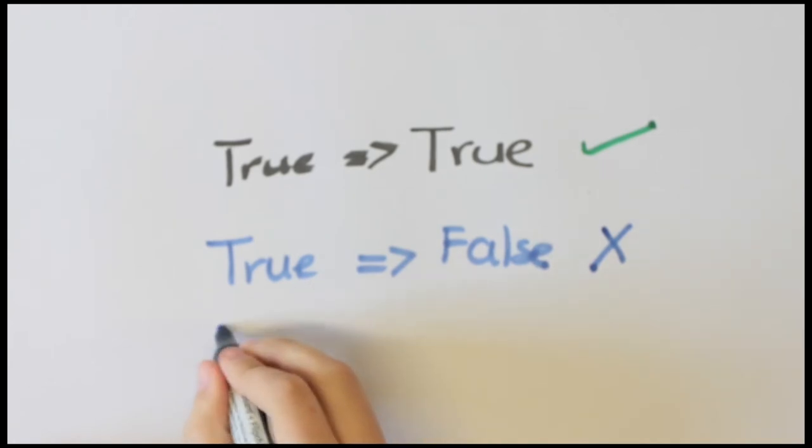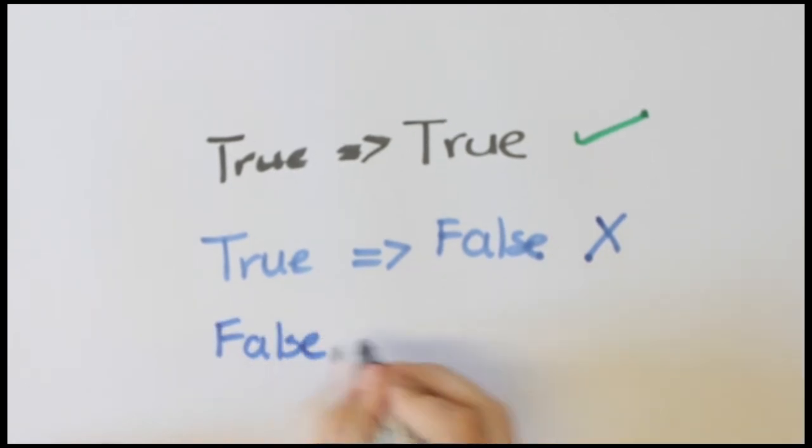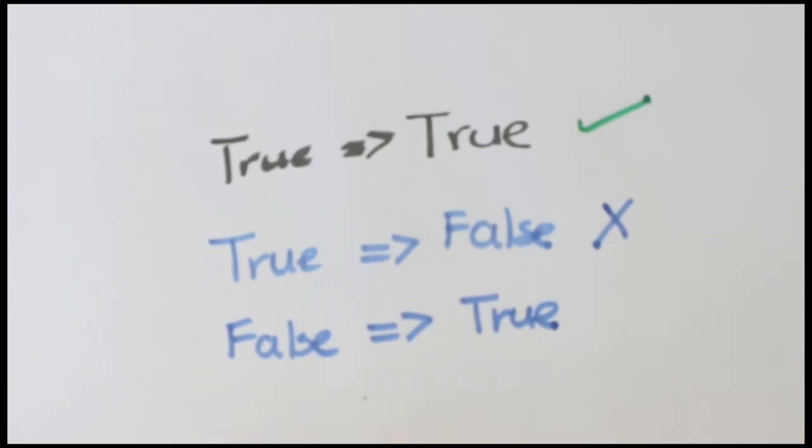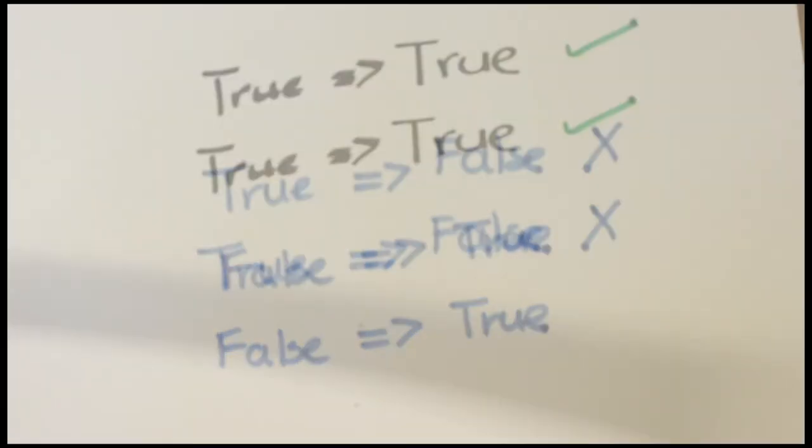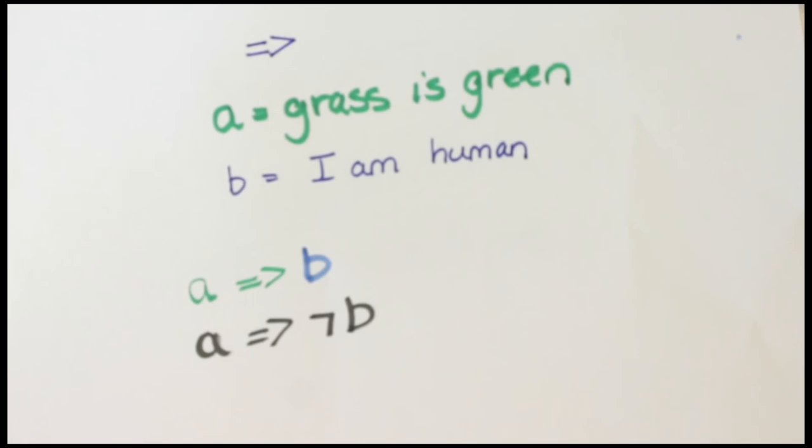Now let's consider the case where you start off from a false statement. The truth table in your notes says false implies true is true. This does not make any sense. Why is this so?